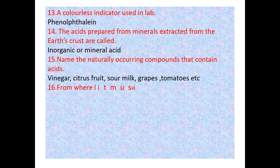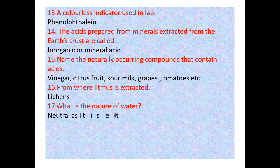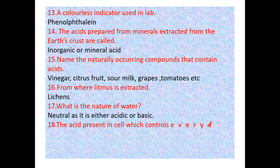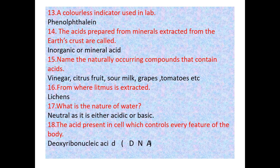Question 14: Name the naturally occurring compounds that contain acids — vinegar, citrus fruit, sour milk, grapes, tomatoes, etc. Question 15: From where is litmus extracted? From lichen, a symbiotic association of fungi and algae. Question 16: What is the nature of water? It's neutral — it is neither acidic nor basic.